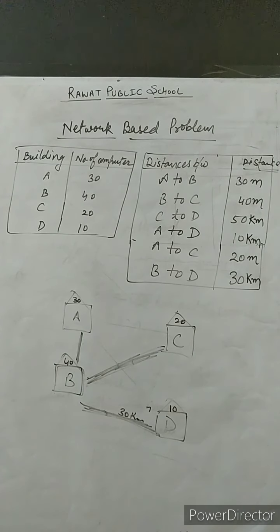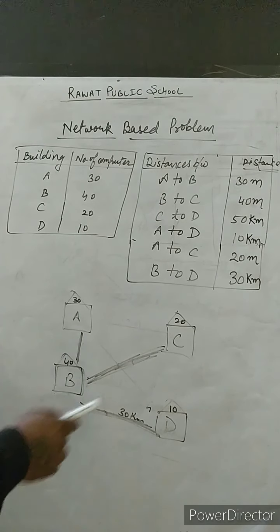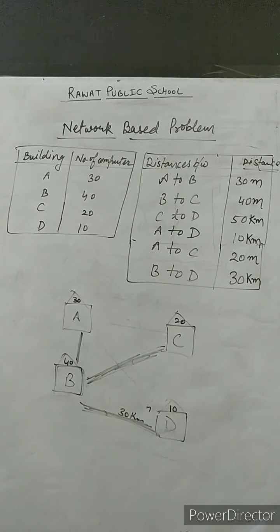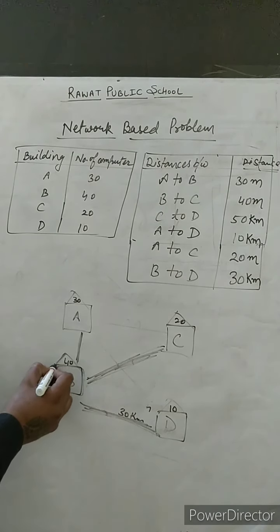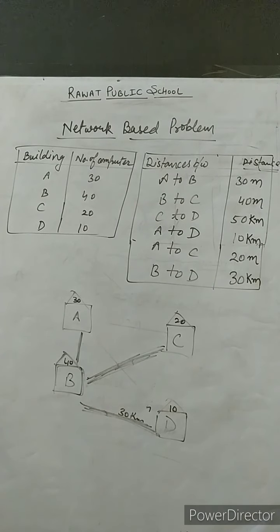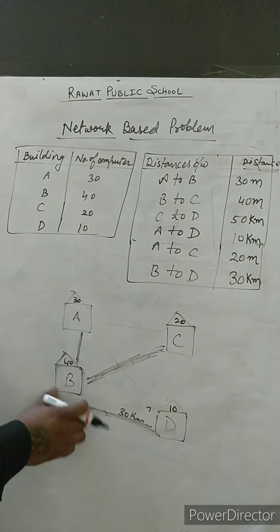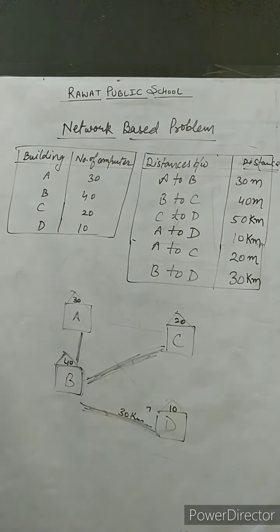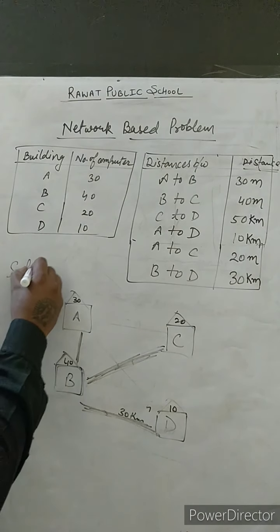This is the basic network layout where I have connected the buildings using three connections. The justification for connecting all buildings through building B is that B has the highest number of computers. So I am making it the administrative department, and all other buildings are directly connected to B. Building B becomes the central location from which all buildings are connected. This is the solution to question one — draw the network layout to connect all four buildings.